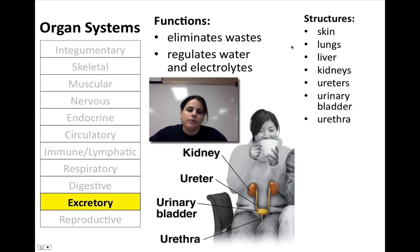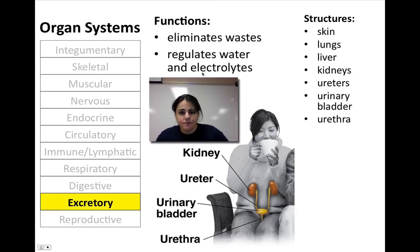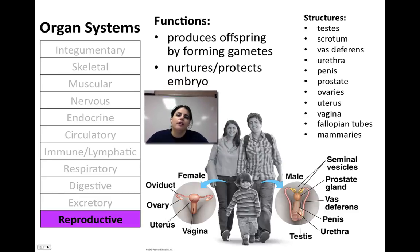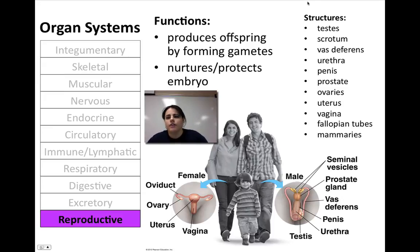The excretory system — sometimes referred to solely as the urinary system, but including the skin, lungs, and liver — helps get rid of waste. It helps regulate water and electrolyte balance. The skin, lungs, liver, kidneys, ureters, urinary bladder, and urethra are the main parts of the urinary or excretory system. Last but not least, the reproductive system produces offspring by making gametes, and if you're female, helps nurture and protect the embryo. For males: testes, scrotum, vas deferens, urethra, penis, and prostate. For females: ovaries, uterus, vagina, fallopian tubes, and mammary glands.